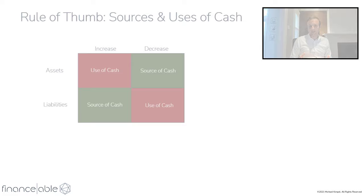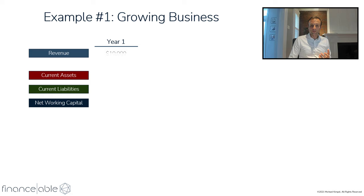Let's take a look at an example of a growing business that has negative working capital. This business has $10,000 of revenue, $1,000 of current assets, and $1,500 of current liabilities — so it has negative working capital of $500. We can say that working capital is negative 5% of revenue, and we're going to hold that constant going forward.